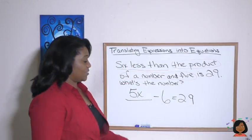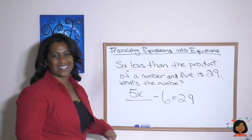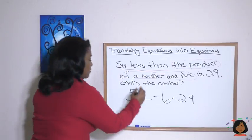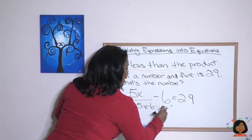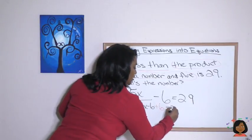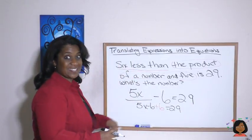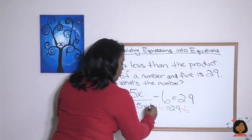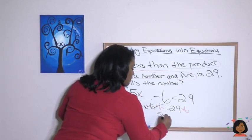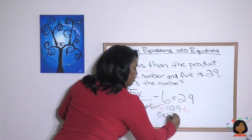And this is just another algebraic equation. We can solve for X. First thing we have to do is get rid of the negative six by adding six. I'm going to rewrite it for you. 5X minus six plus six to this side. 29. If we added six over here, we need to add six over here. We are left with 5X equals 35.